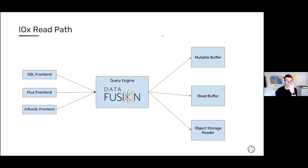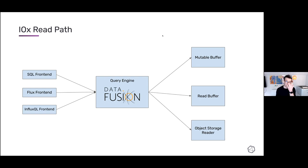On the read path, we'll have various front ends — SQL, Flux, InfluxQL, maybe others in the future — and they all go into the query engine, which is powered by DataFusion. That query engine is then responsible for figuring out the best place to answer the query: is it only in object storage? Has it been written recently and can I get it from the mutable buffer? Or does the read buffer have it? The query engine will run against all these execution engines and combine the results, also figuring out who can handle what.